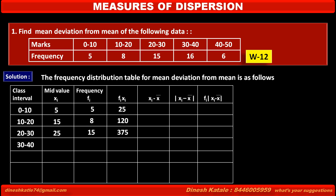The fourth class interval is 30 to 40. So its mid-value is (30 + 40) / 2 = 70 / 2 = 35. Its frequency is given as 16. So the product fi·xi is 35 × 16 = 560.